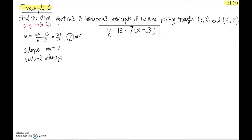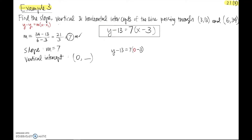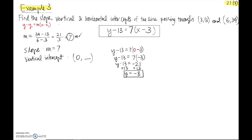To find the vertical intercept, I plug 0 in for x in our equation: y − 13 = 7(0 − 3). So y − 13 = 7 times (−3), which gives y − 13 = −21. Adding 13 to both sides: y = −21 + 13 = −8. So the y-intercept is (0, −8).